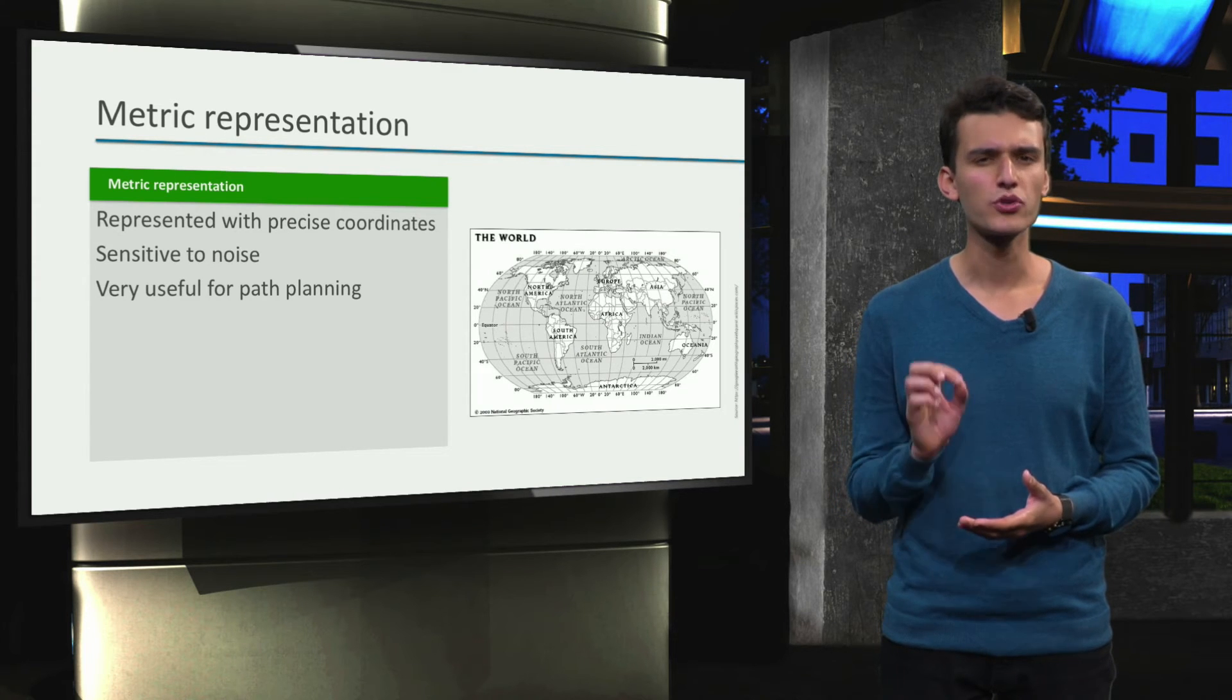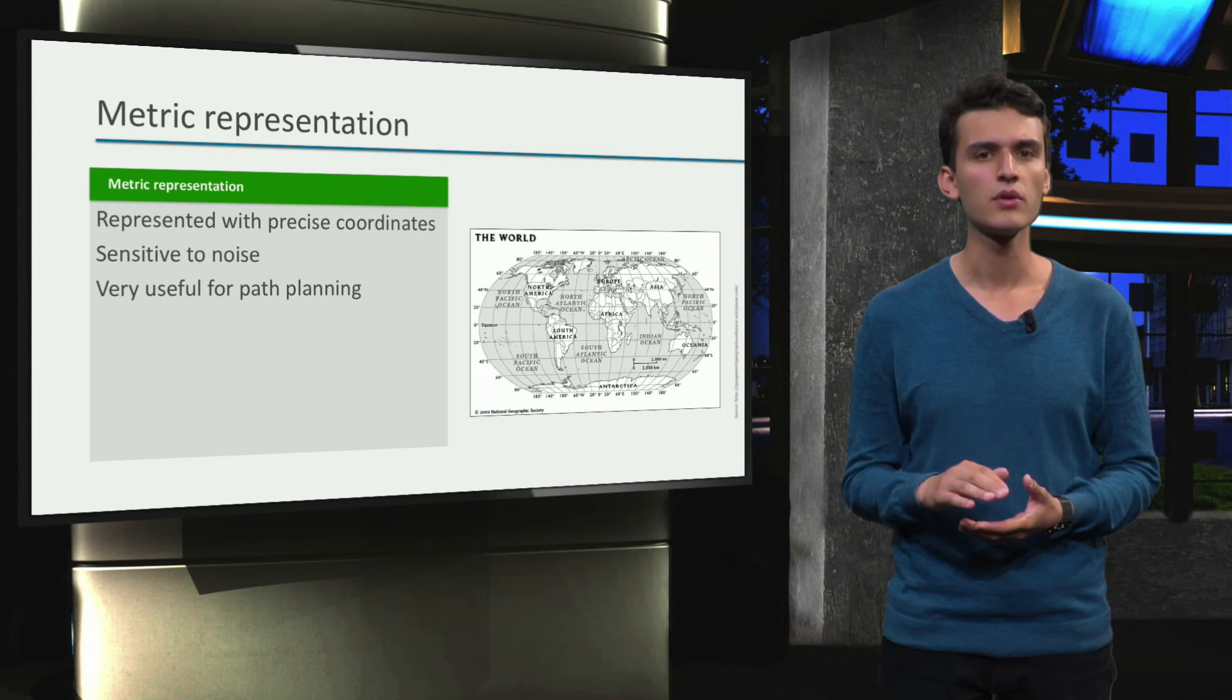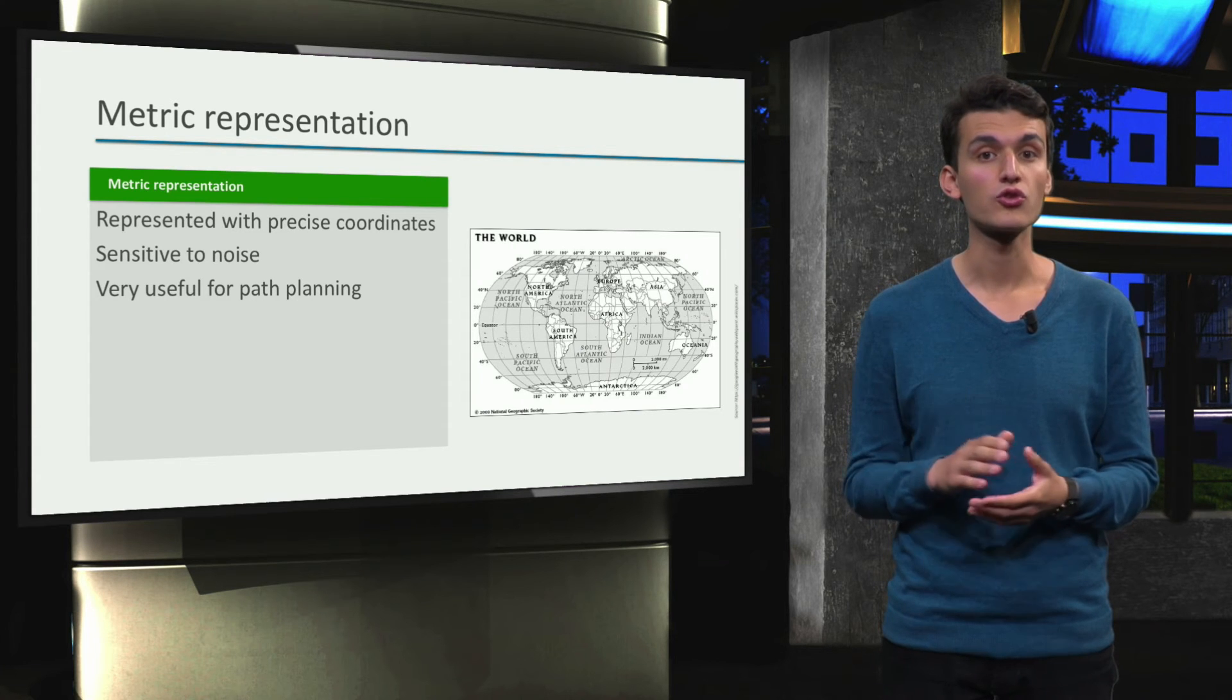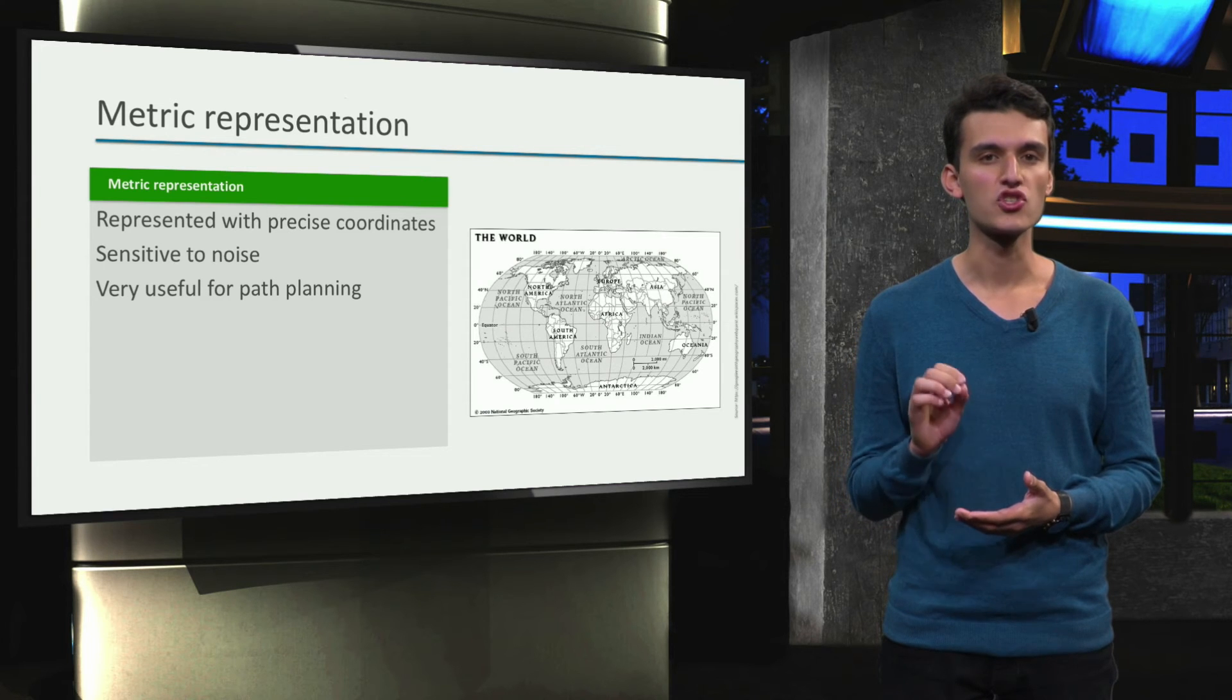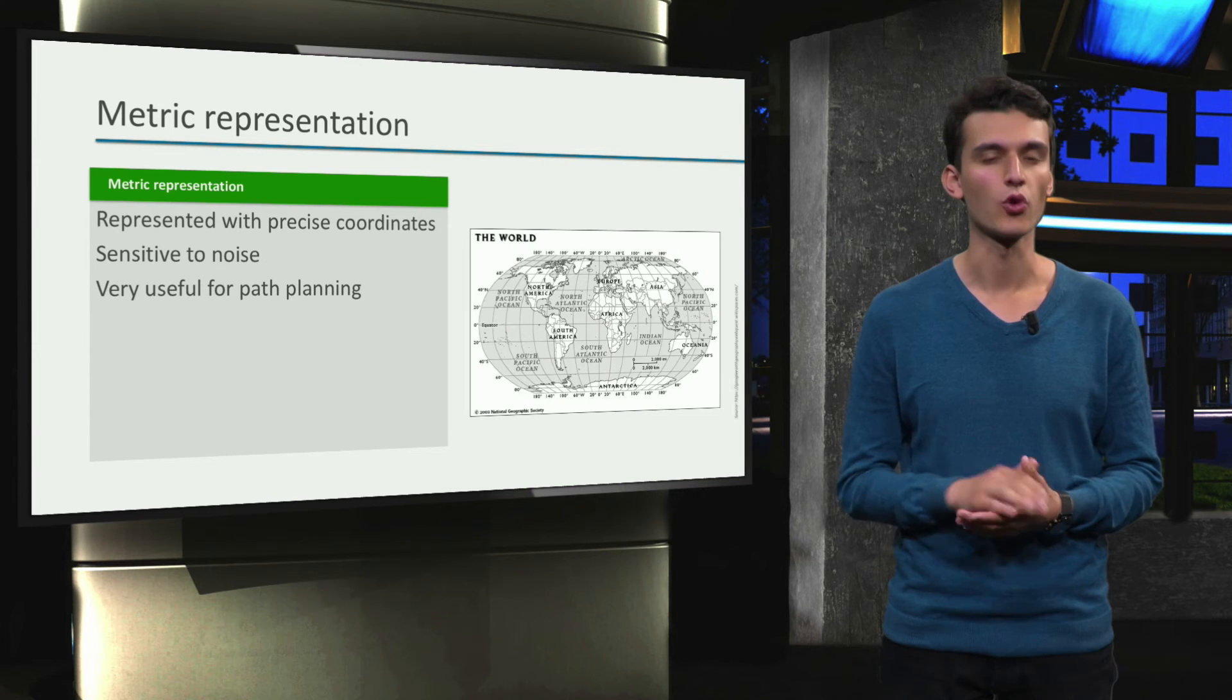This representation uses precise coordinates. For example, longitude and latitude are used to determine every place on earth. Because this method needs to be so accurate and precise, it's pretty sensitive to noise.